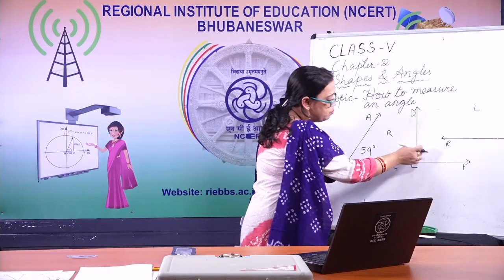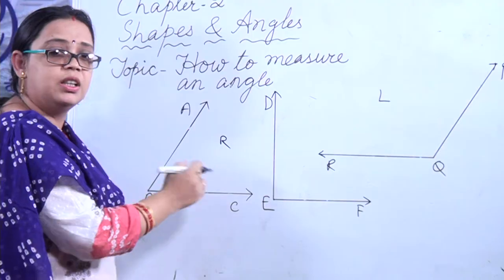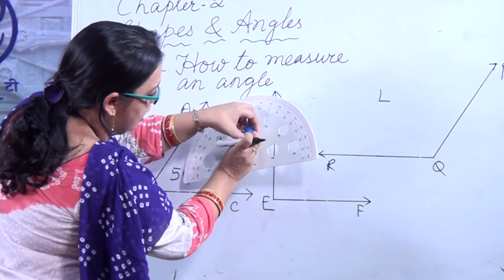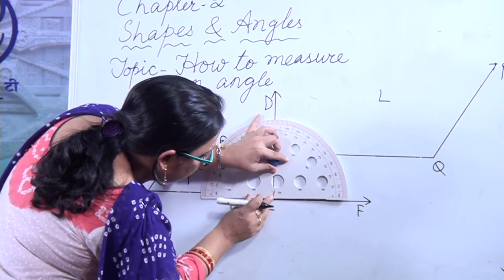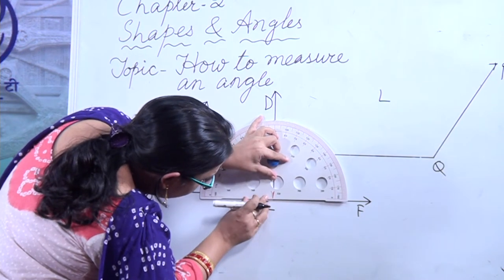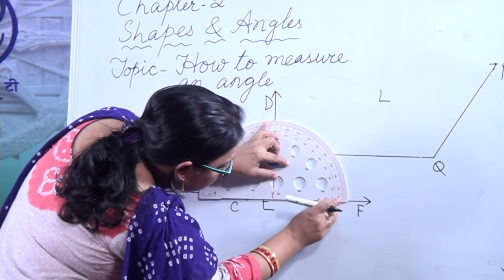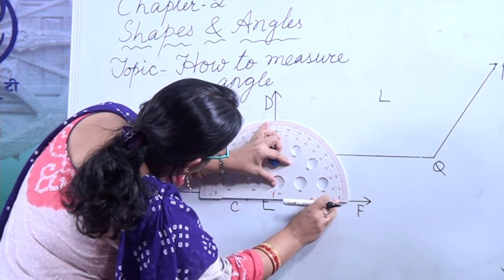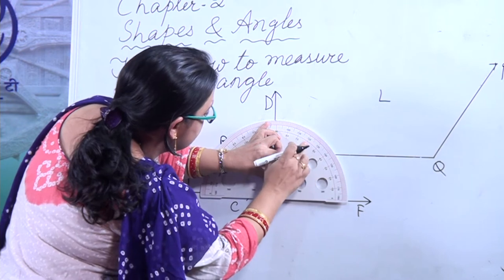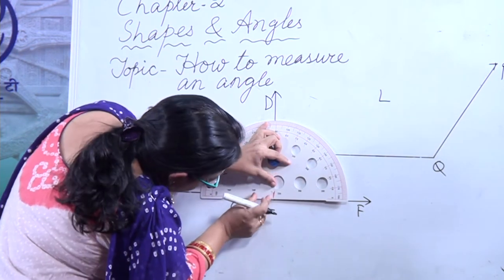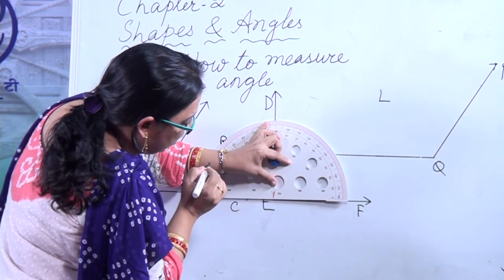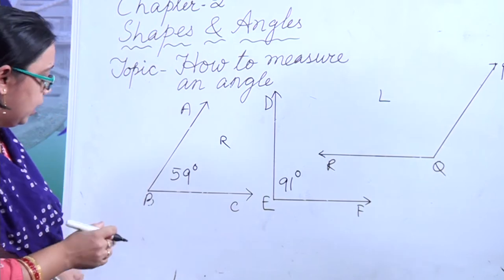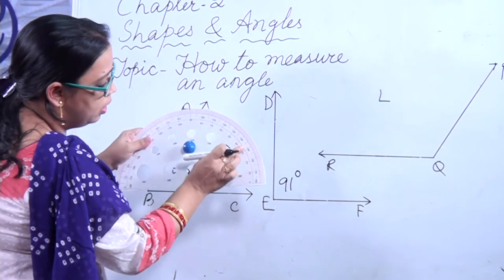Now let us measure the second angle DEF. Can you guess? It must be nearly equal to 90 degrees. Same process — the vertex of the protractor must coincide with vertex E, and adjust the zero mark. Start counting: 10, 20, 30, 40, 50, 60, 70, 80, 90 — and it reads 91. Your guess is nearly correct. In both these angles, we used the inner scale.